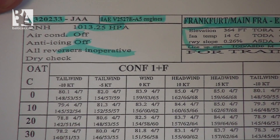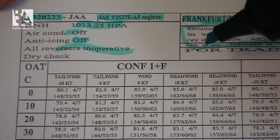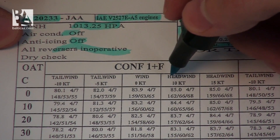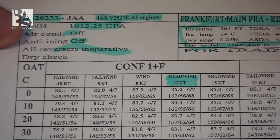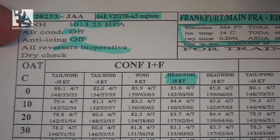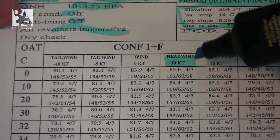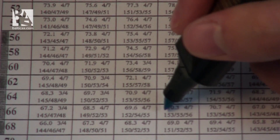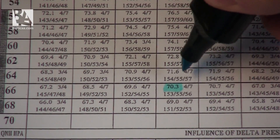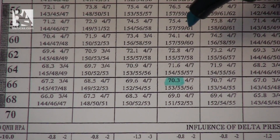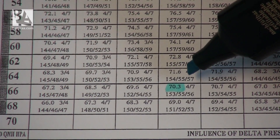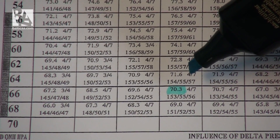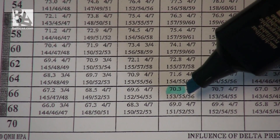What we do now is find our weight figure against the wind. Let's say we have a headwind of 10 knots at Frankfurt and our weight is 70 tons. We go all the way down until we find 70.3, which is right here. We can always go a little bit above our weight — in this case 70.3 — but we can never go below it, so 69 would be unacceptable.